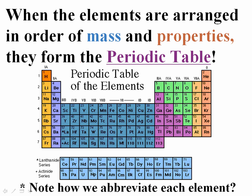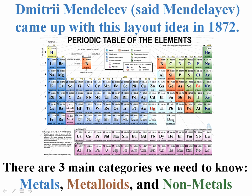When the elements are arranged in order of mass, the periodic table forms. We're basically organizing them by their mass. Please remember, each element does have an abbreviation. It's got its symbol. Mendeleev came up with this layout basically in 1872, and he did create the three main categories at that point. The three categories were the metals, the metalloids, and the non-metals. So let's look at where they actually fall on the periodic table.